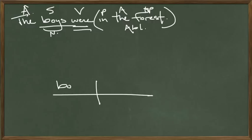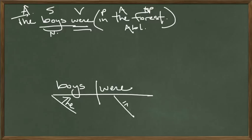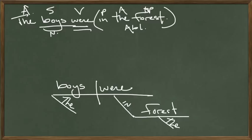We have 'boys' on the subject side, 'were' on the verb side. 'In' goes on a preposition line — it's slanted just like an adjective. However, we have a straight line off the bottom of it, and that's where we put the object of the preposition: 'forest.' In the forest. Now we have a complete diagram: 'The boys were in the forest.' All that's left is to translate it.